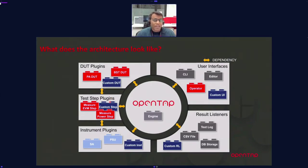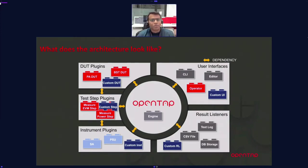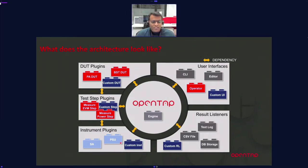We also have the test step plugin. A test step is like a function — for example, if you want to benchmark your PC, you need to check CPU performance, RAM read/write speed, and storage. Each individual test step handles one thing, like CPU testing or RAM testing. All those steps come together in a group, and the overall container is called a test plan.